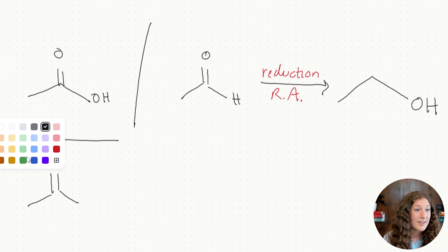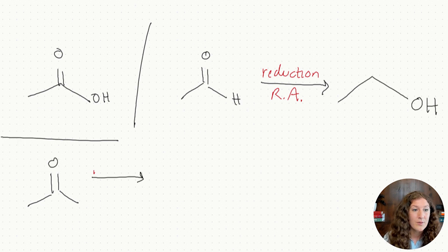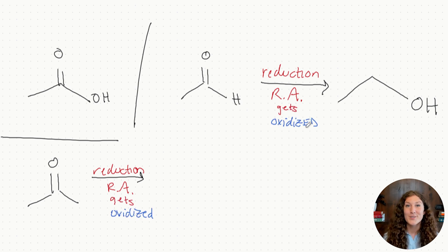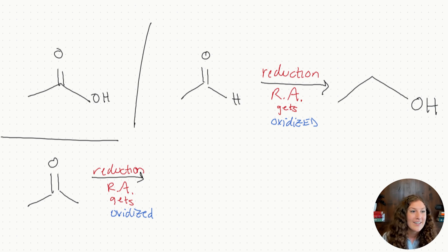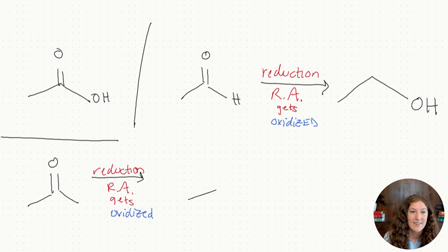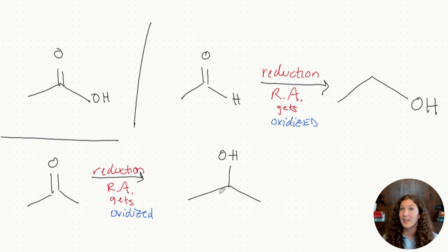Similarly with our ketone, we're going to go through a reduction reaction by adding our reducing agent, which will get oxidized. The reducing agent is going to lose hydrogens or electrons and give them to our other reactant, and for our ketone that's going to result in a secondary alcohol — our isopropyl alcohol again. It's truly just the reverse of the reactions we just discussed; we're just adding a reducing agent instead of an oxidizing agent.